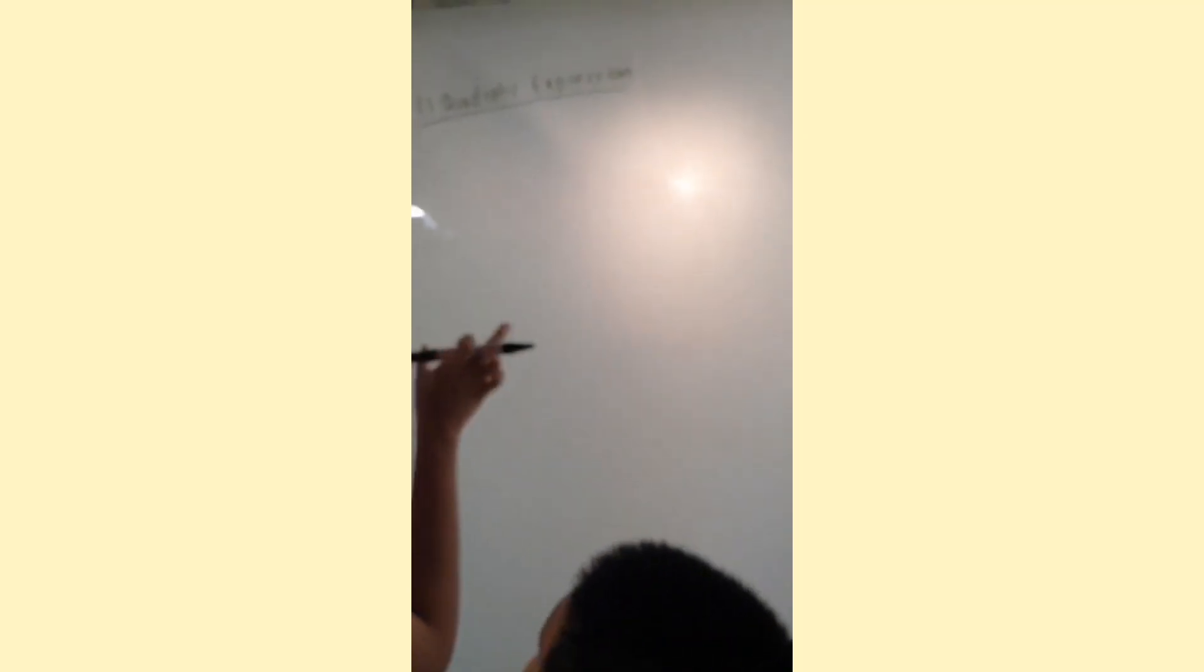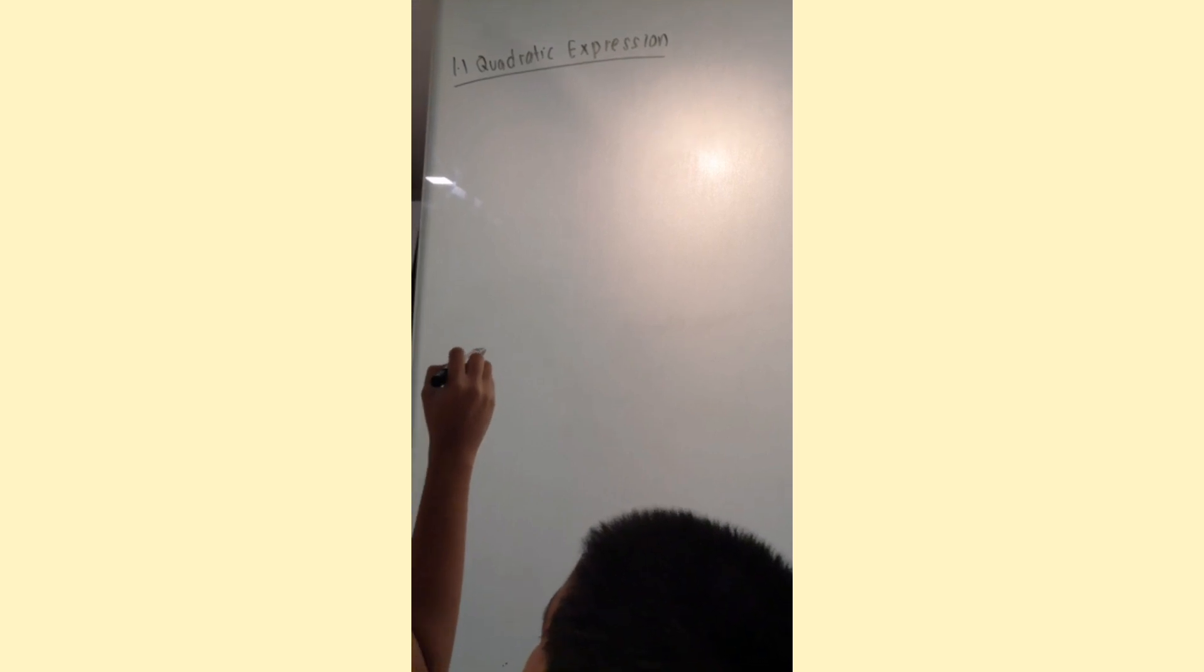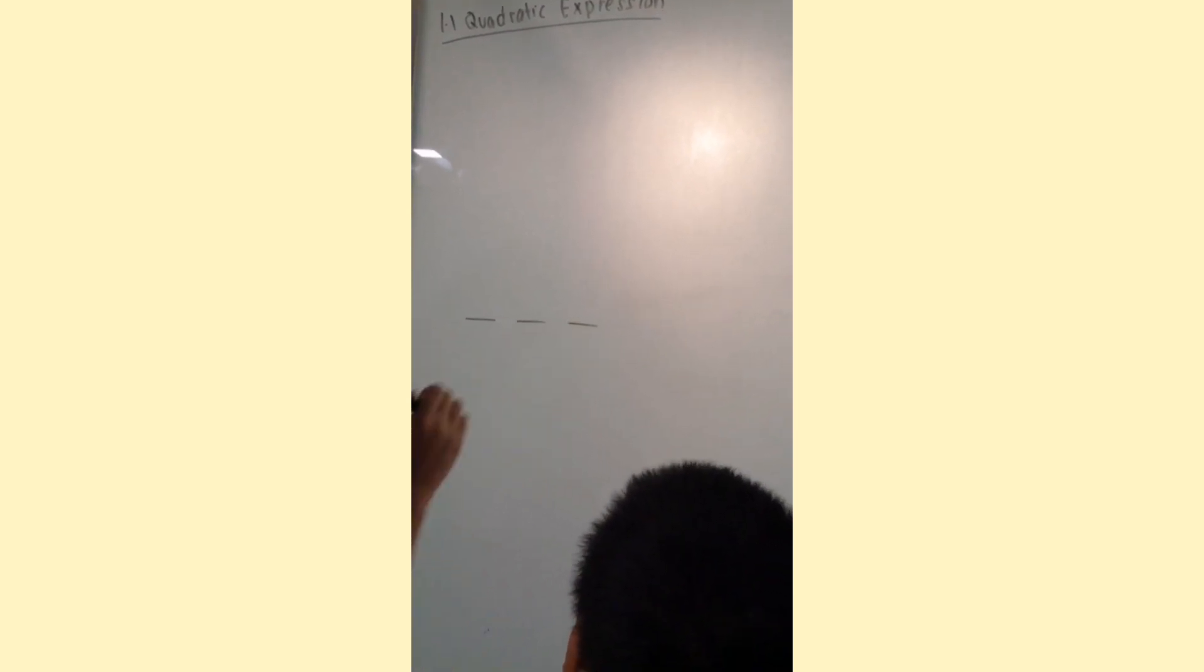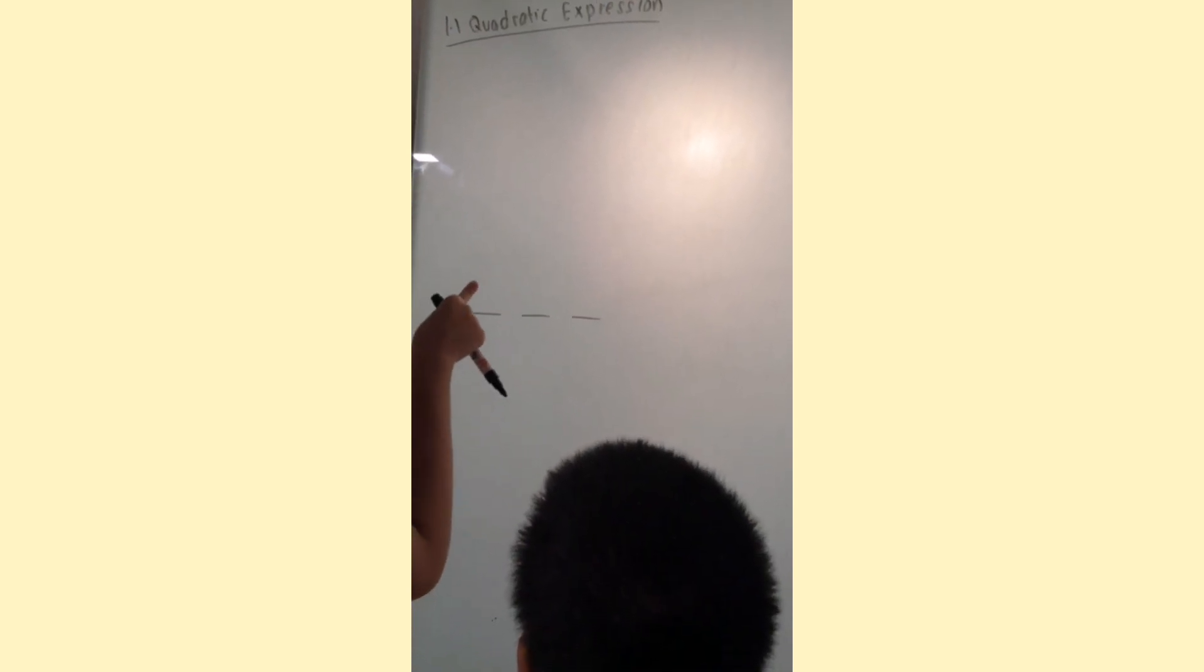This is how you do your quadratic expression. You have to remember this. The first one, there will be three things you have to remember. One, three lines. Just remember, three lines. Imagine it as like a game. Three lines.